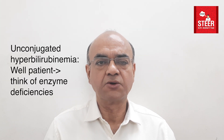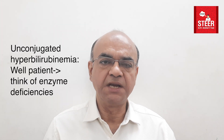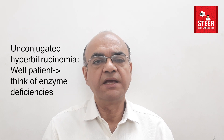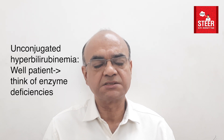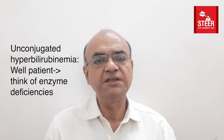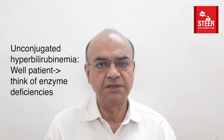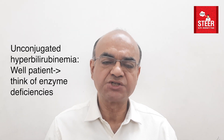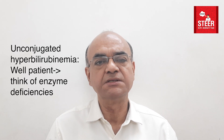Coming to unconjugated hyperbilirubinemia — while it may be seen in hepatitis in the early phase, it has other causes. Among the benign causes are enzyme deficiencies like Gilbert syndrome or Crigler-Najjar syndrome type 2, where there is a defect in the conjugation of bilirubin in the liver, and patients may present with just mild persistent jaundice.